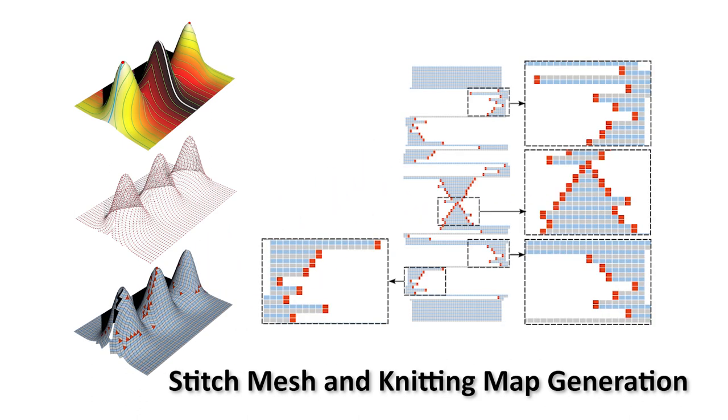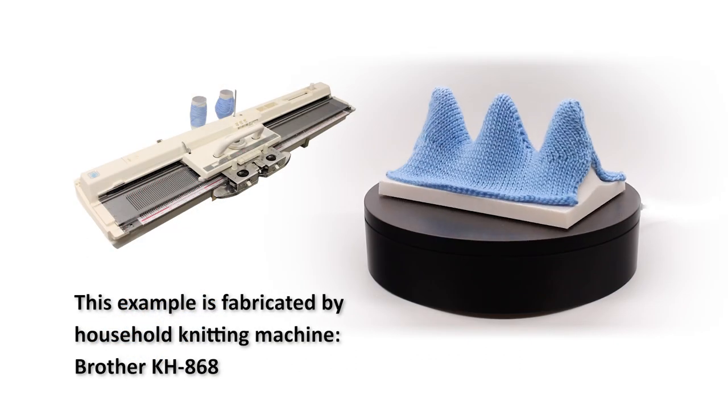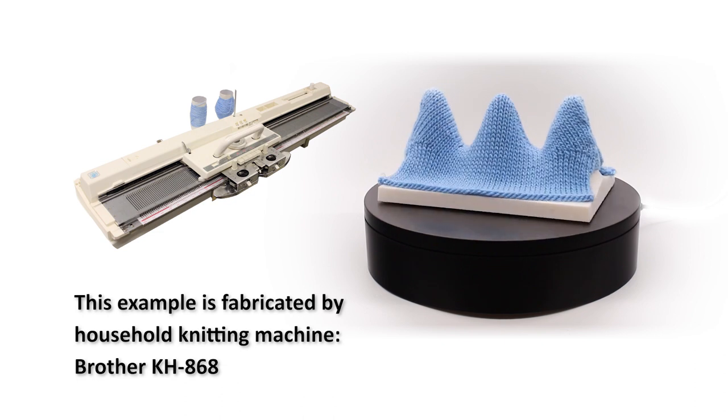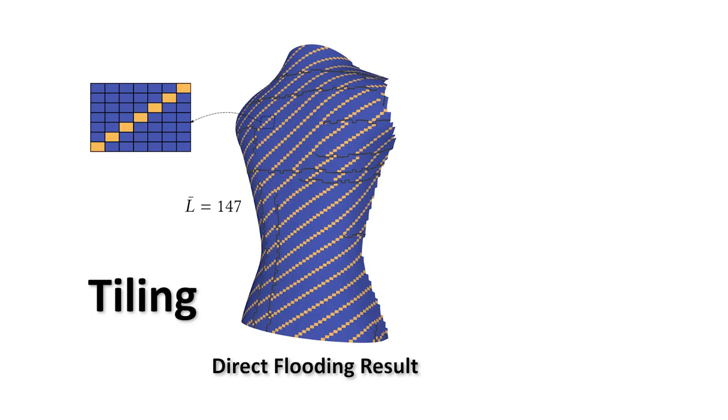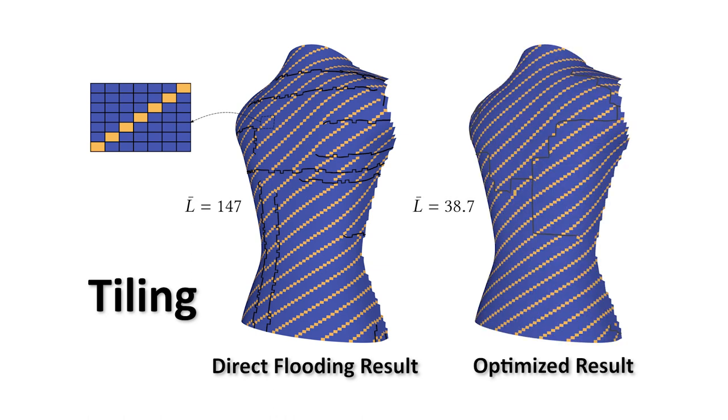We have provided the corresponding knitting map for the triple-peak result here. Here shows the physical result of triple-peak model fabricated by a household knitting machine. The designed jacket patterns are tiled on the stitch mesh to realize the designed distribution of elasticity in machine knitting. The discontinuity of tiling has been minimized by our algorithm.